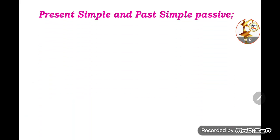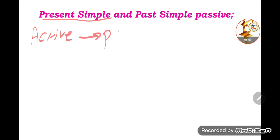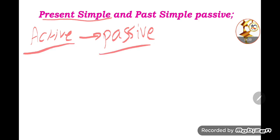Today, we will begin the process of changing from active to passive. We'll work on two tenses: present simple and past simple — both affirmative and negative sentences — converting from active (مبني للمعلوم) to passive (مبني للمجهول).